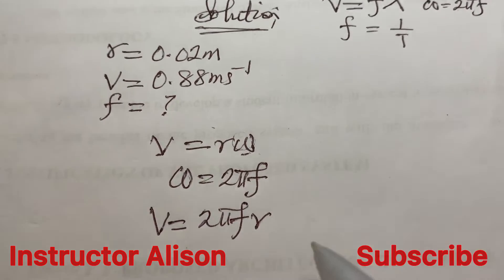Now remember we are looking for the frequency. We can make frequency the subject of the relation, and therefore we have f equal to - by the time we divide both sides by 2πr - then we have that V all over 2πr.